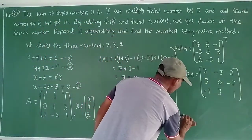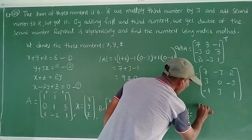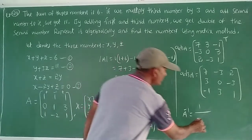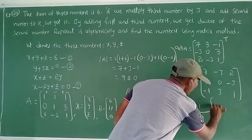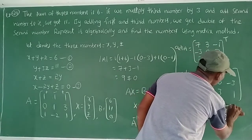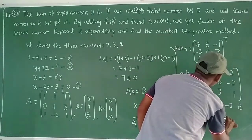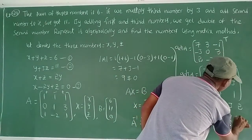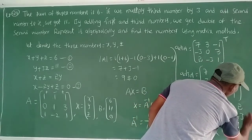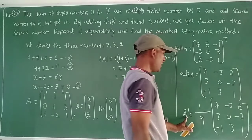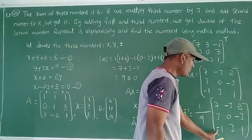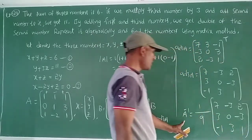A inverse equals 1 by 9 into adjoint A. So A inverse equals (1/9) times the matrix [7, −3, 2; 3, 0, −3; −1, 3, 1]. This is A inverse.